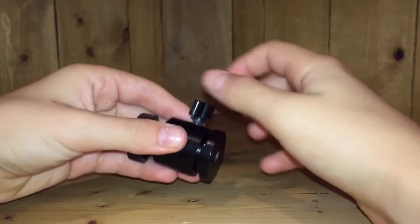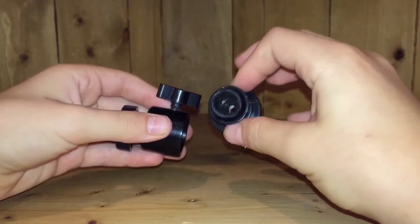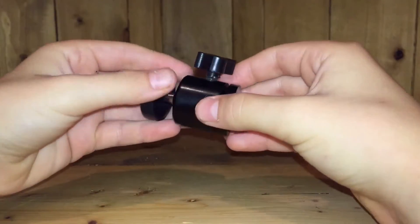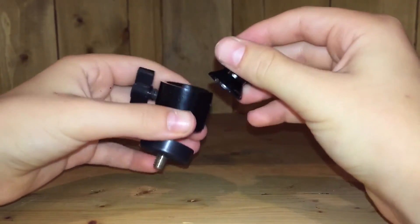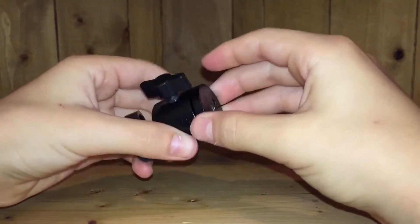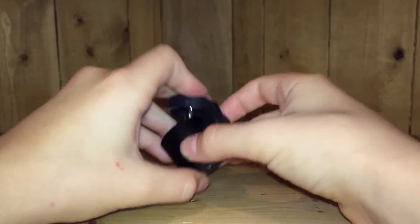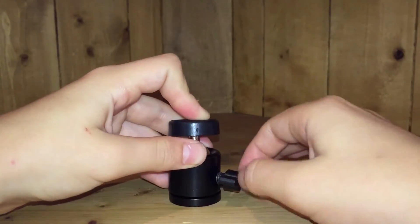Now sometimes if you unscrew the screw too much that will fall out. That's not a big deal. Just stick it back in there, lay it down on the ground or a surface and then just screw it back in.